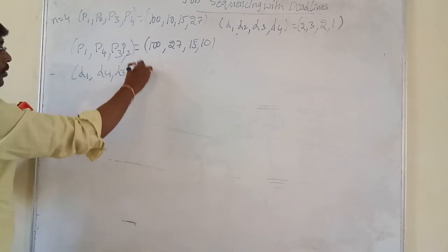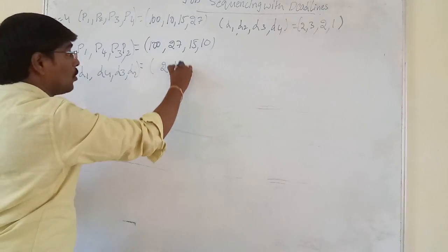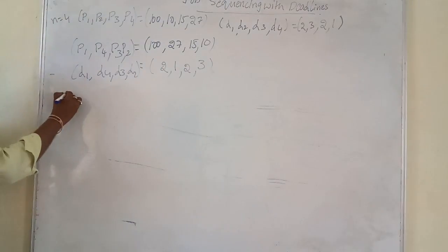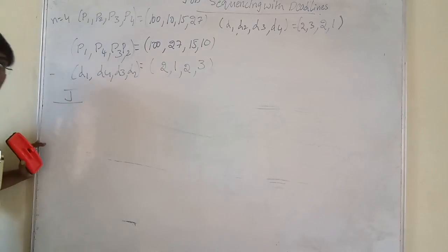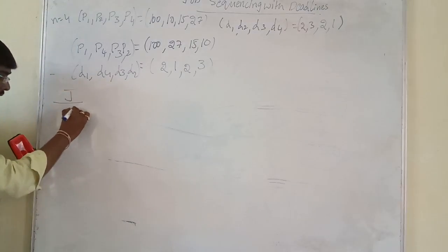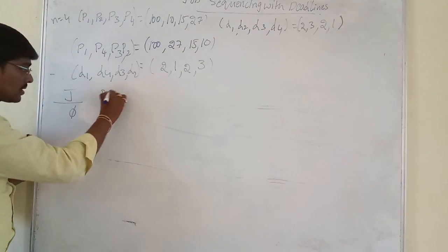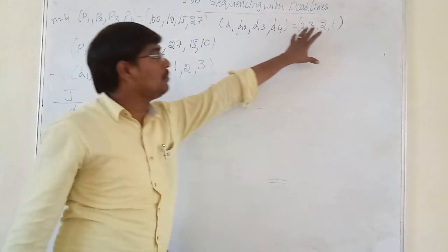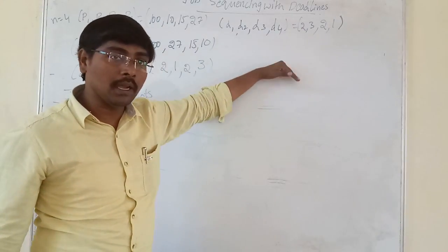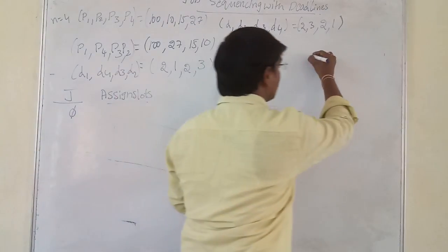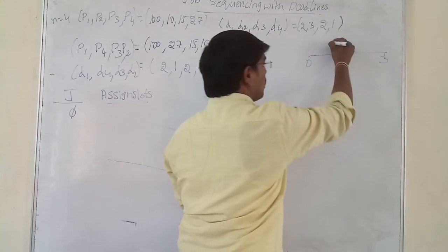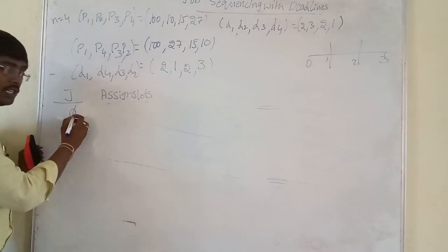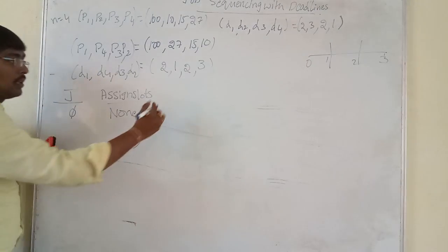The corresponding deadlines are D1=2, D4=1, D3=2, and D2=3. J is a subset of jobs. Initially we are selecting no job, so J is equal to empty set. In this example, the maximum deadline is 3, which means we are executing a maximum of 3 jobs. Initially no slots are assigned.